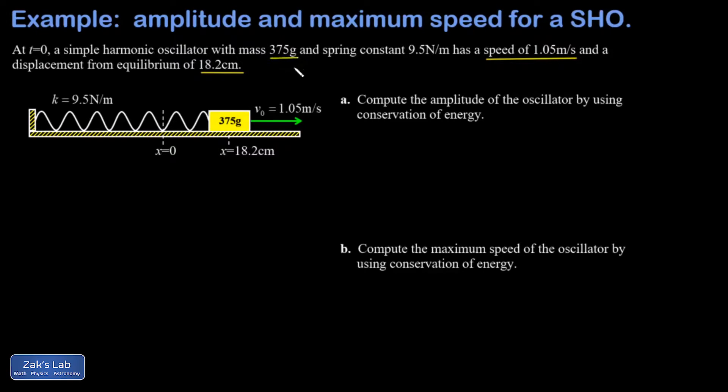We're given the specs: the mass is 375 grams, we'll want to change that to 0.375 kilograms, and the spring constant is 9.5 newtons per meter. In part a we're asked to find the amplitude of the oscillator by using conservation of energy.